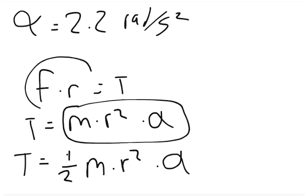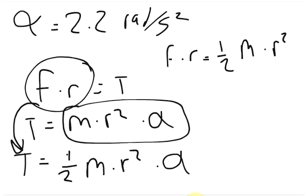And so we can substitute force times radius right here. We can say that the force times the radius equals 1 half of the mass times the radius squared times the angular acceleration.